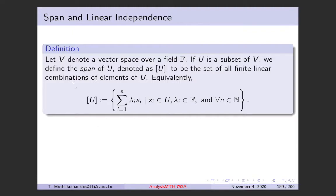If we have a vector space V over a field F and a subset U of V, then the span of U is the set of all finite linear combinations of elements of U. That is, you take any subset of V and put in all possible finite linear combinations with respect to the elements of U — that collection is called the span of U.